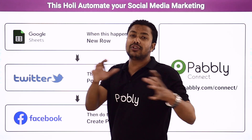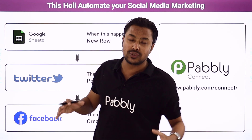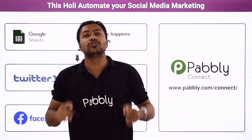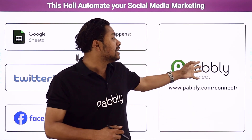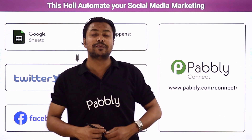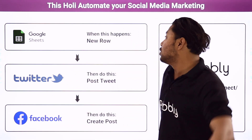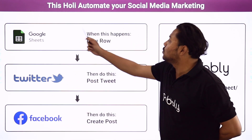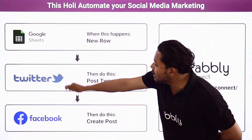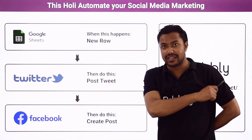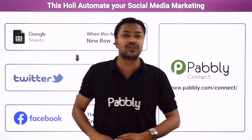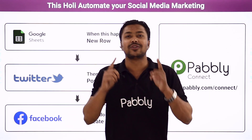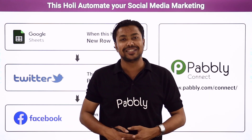You can use several other apps as well. To do this automation, we are going to use an integration and automation service, Pabbly Connect, which will help us connect Google Sheets, Twitter and Facebook together. Now if you want to learn how to do this automation, you have to come with me to the screen.